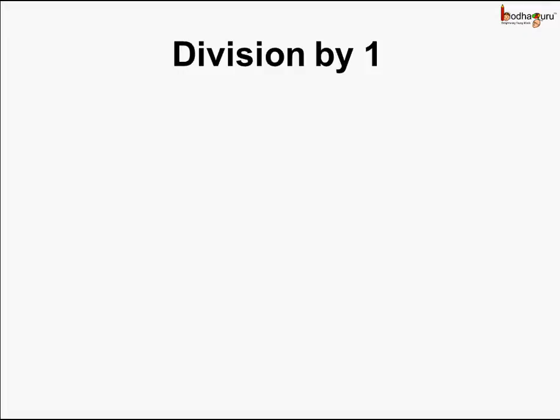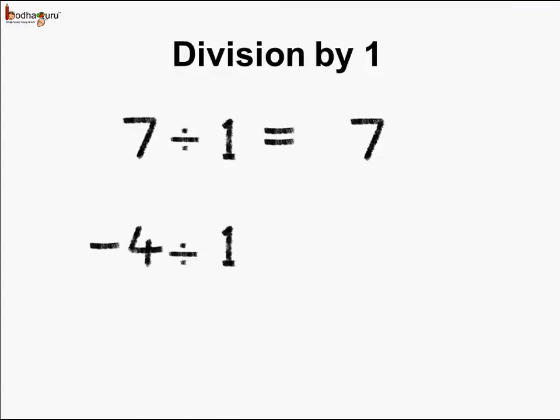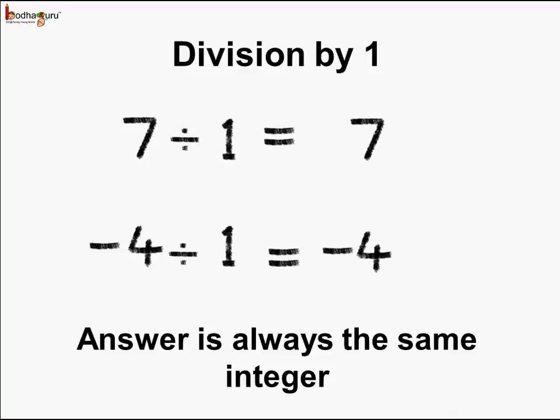Now let's divide by 1. 7 divided by 1 is 7 itself. Minus 4 divided by 1: we know when we divide a negative number by a positive number, the result is negative, and 4 divided by 1 is 4. So the answer is minus 4. The answer is always the same integer when we divide by 1.